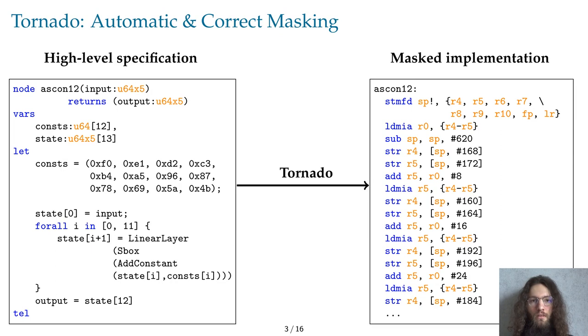Tornado takes as inputs some code written in a programming language called Usuba, which was designed to efficiently compile high-level specifications of ciphers on high-end x86 CPUs. Tornado compiles those high-level specifications into masked implementations in assembly for embedded devices. We'll start by talking about what masking is, and why it is a useful countermeasure to side-channel attacks,